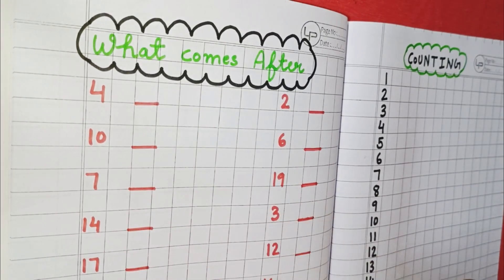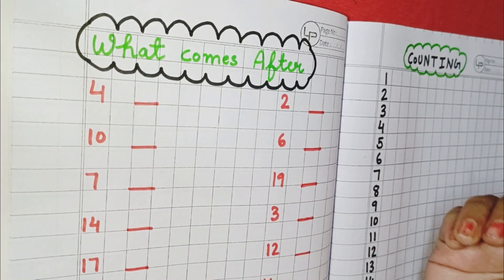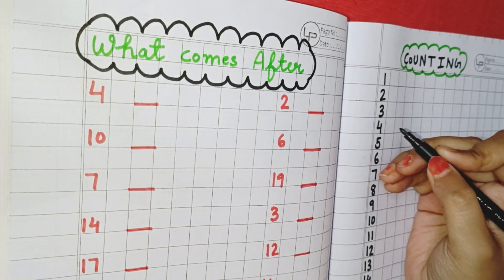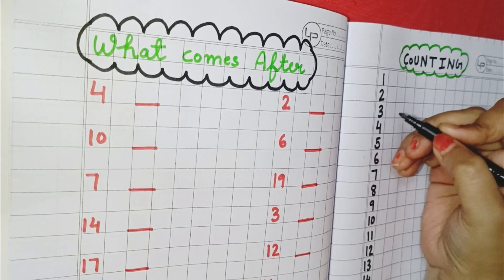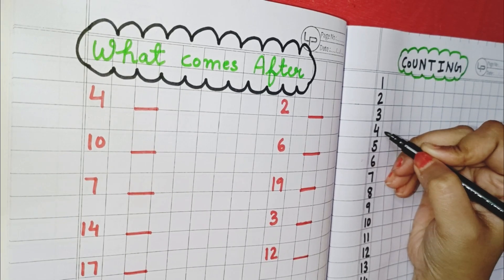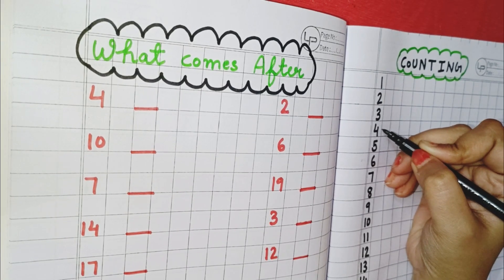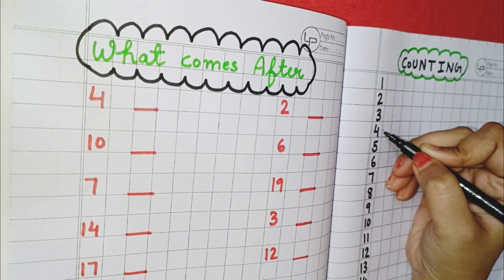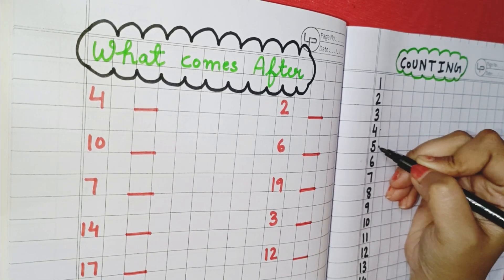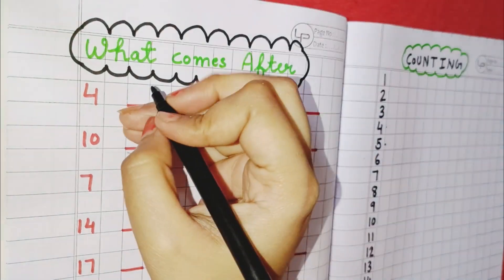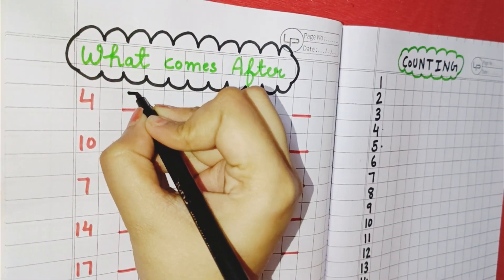We have to find what number comes next to 4. You can see here is 4, and the number which comes next to 4 is 5. So, you will write here 5.